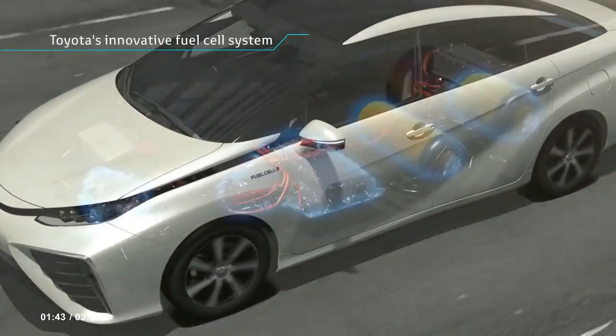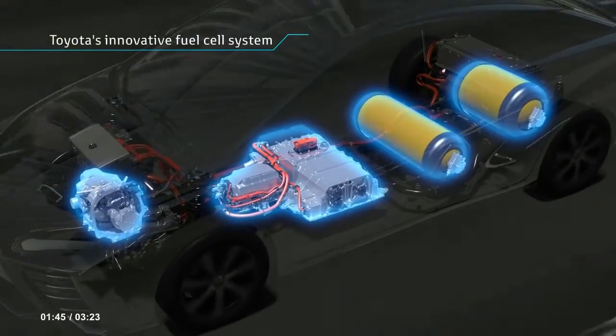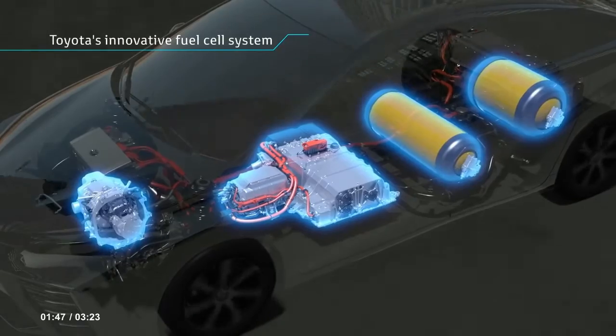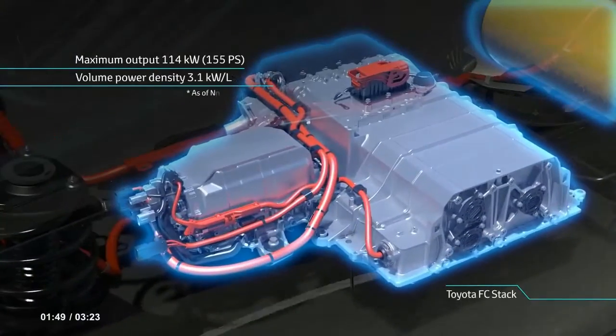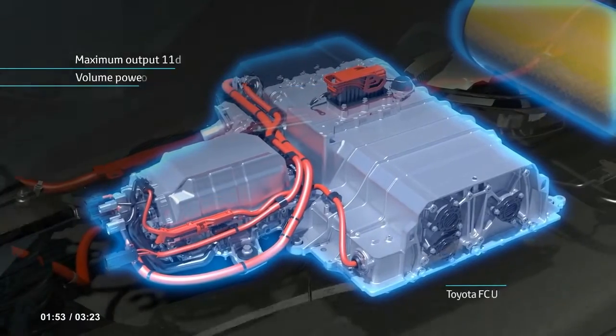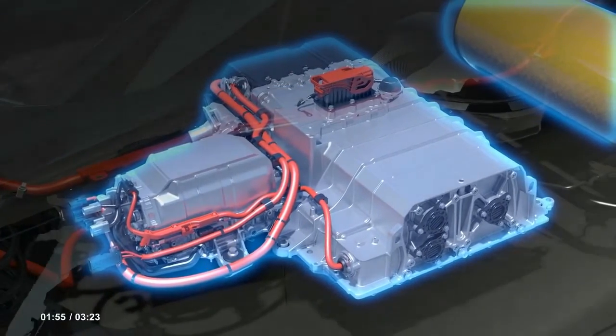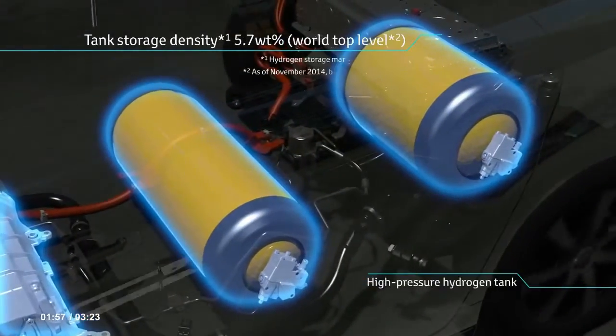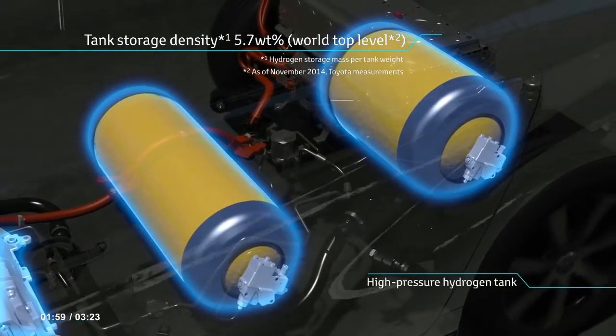The fuel cell unit in the FCV generates over 100 kilowatts of its own electricity, operating at 3.1 kilowatts per liter of output power density. The high pressure hydrogen tank contains 5.7 watt percent, which is a world class feature.